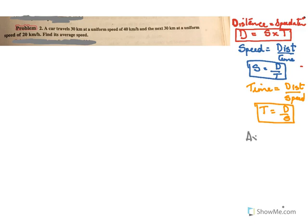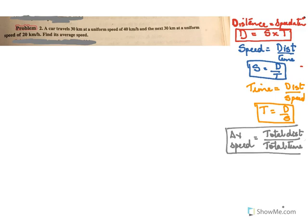So we need to recollect these first. We know that distance is speed into time. Second, speed is distance over time. And last, time is distance over speed. There is another formula we need to know: average speed is total distance over total time.